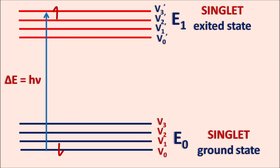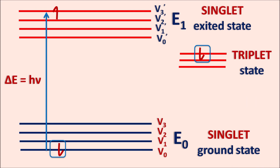Alternatively, if the excited electron has the same spin as the ground-state electron, net spin S = 1, M = 3 — the triplet state. The triplet state always indicates an excited state. When energy is supplied, the electron jumps from singlet ground state to singlet excited state; it will never jump directly from singlet to triplet. Transitions between different multiplicities are forbidden; only transitions within the same multiplicity are allowed.